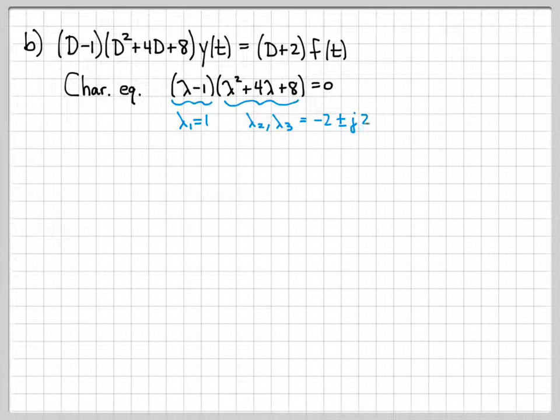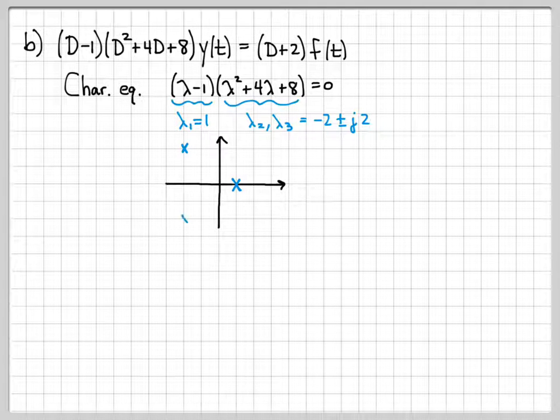This polynomial here, we already solved for its roots in part A. We know that those roots are minus 2, plus or minus j2. If we plot these root locations in the complex plane, lambda 1 is at 1. And lambda 2 and 3 are at minus 2, plus or minus j2. So they're where they were last time. So the only difference is the root that was at minus 1 has now moved to positive 1.